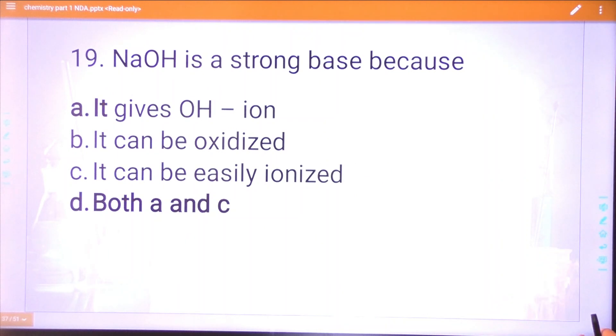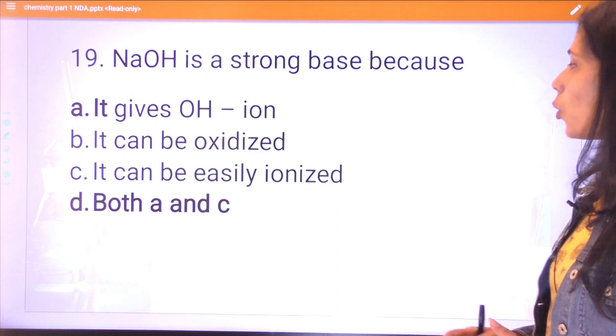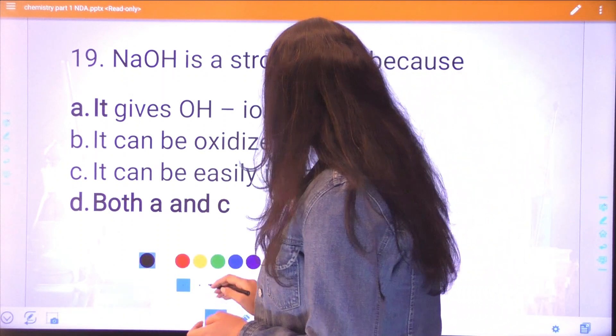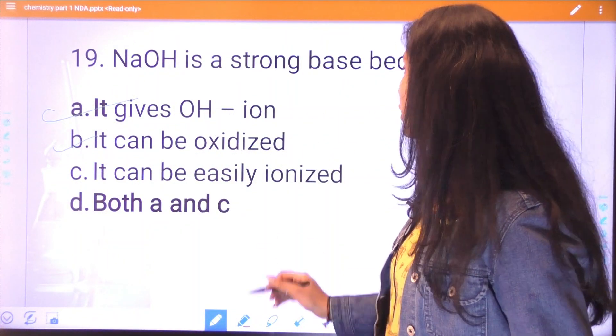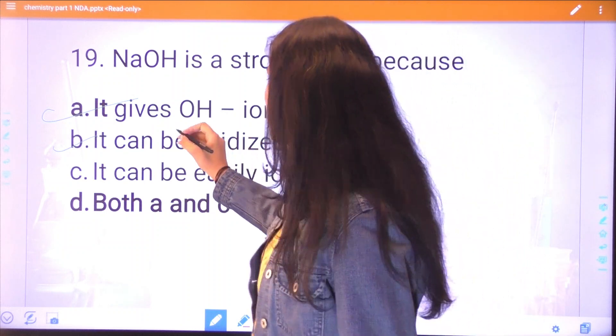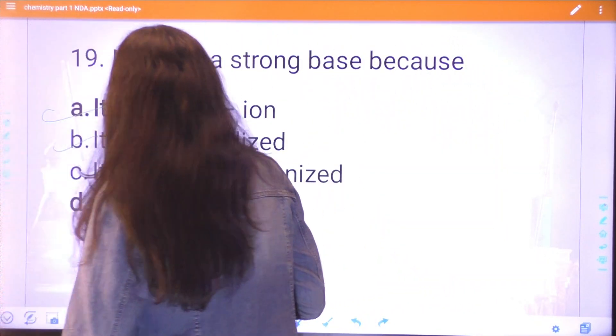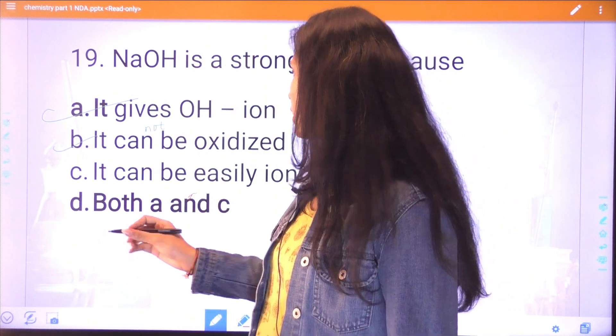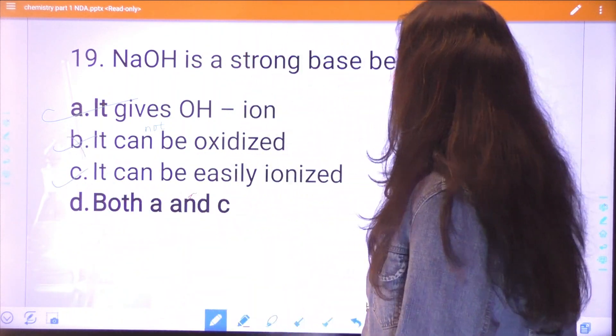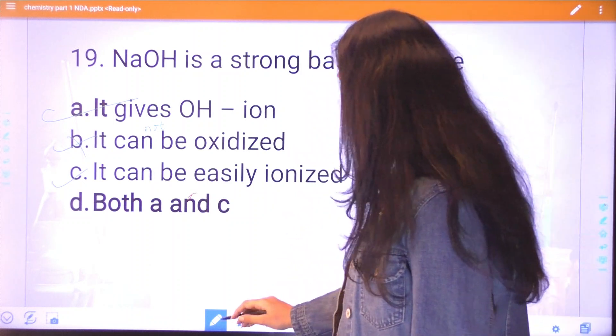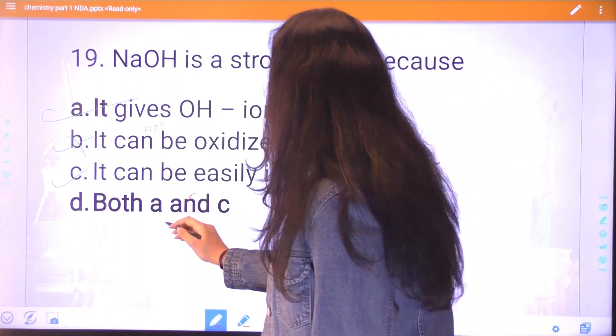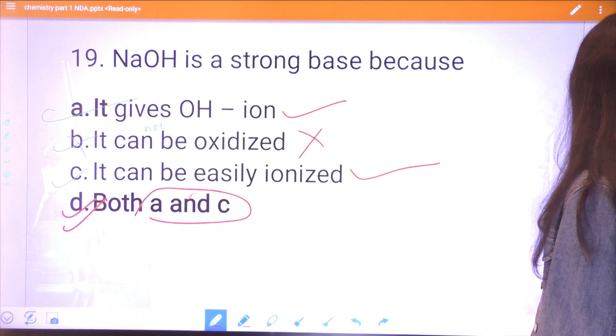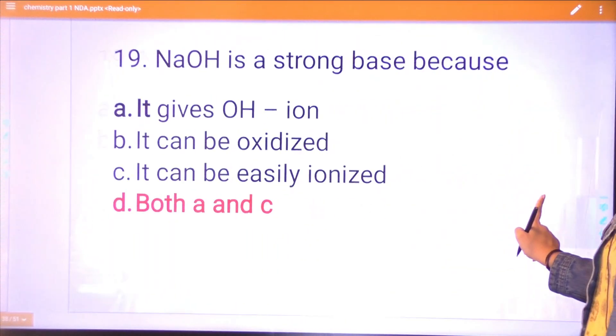Question nineteen: NaOH is a strong base because it can be oxidized. Sorry, it cannot be oxidized. NaOH cannot be oxidized. Can it be easily ionized? We can ionize it, but not oxidize it. So both A and C are the correct answer.